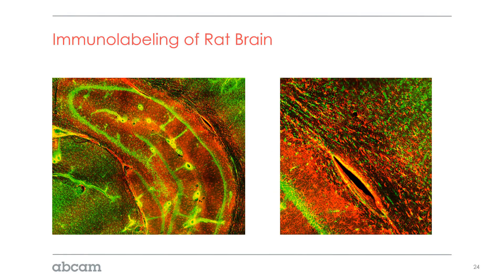Here are some Z projections of a rat brain showing that you can image in multiple channels. We're tiling nine different tiles to create the image on the left at 20x, and on the right is a 40x image. We can see through this depth, but of course the depth by which we can image is really going to be dictated by the type of imaging system and the objectives on that confocal or light sheet microscope.